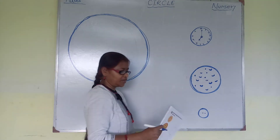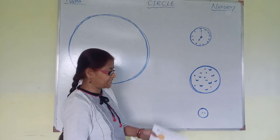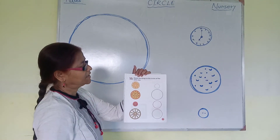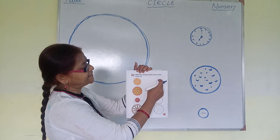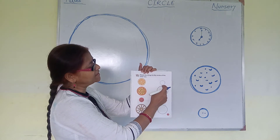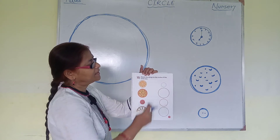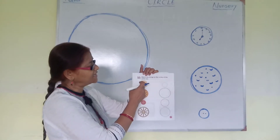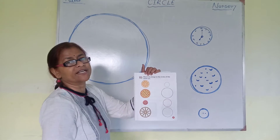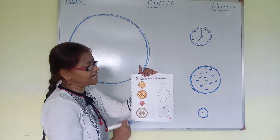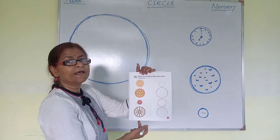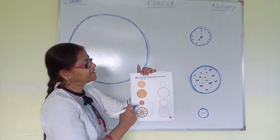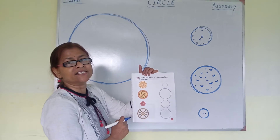Here, look at the picture on the right side of the page. There are 4 circles and here are 4 objects. You will match the circles with the objects by their size.